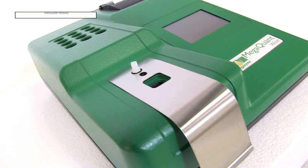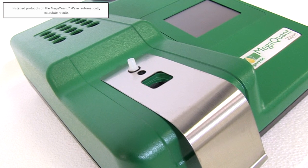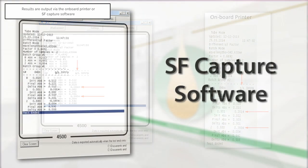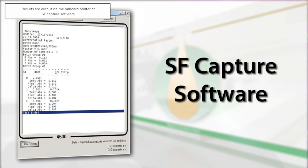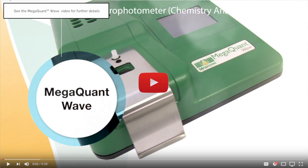When performing this test using the pre-installed protocol on the MegaQuant wave spectrophotometer, the results will be automatically calculated and printed via the onboard printer. Or the data can be exported to a computer using the SFCapture software. Please see our MegaQuant wave video for further details.